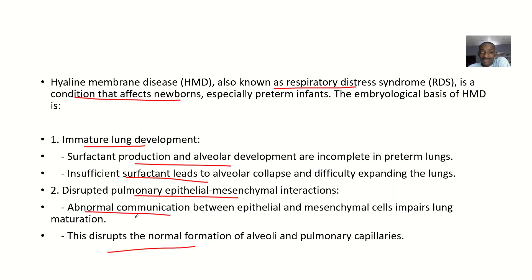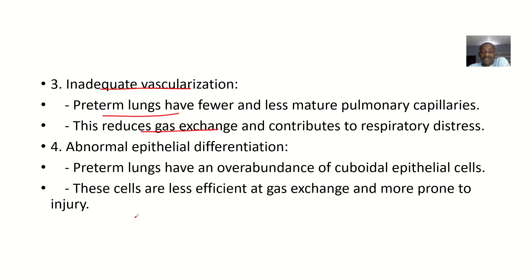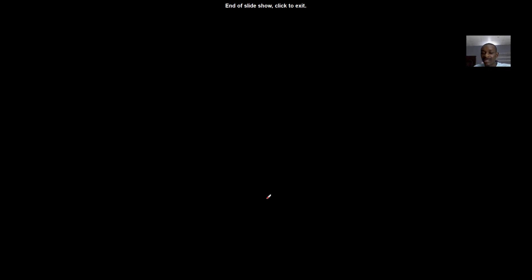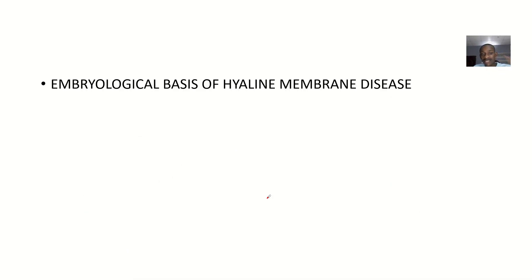All these reasons are valid. You can lead with the one you feel is strongest and back it up with the others, so that if one doesn't score, another will. The fourth reason is abnormal epithelial differentiation: preterm lungs have an overabundance of cuboidal epithelial cells, which are less efficient at gas exchange and more prone to injury.